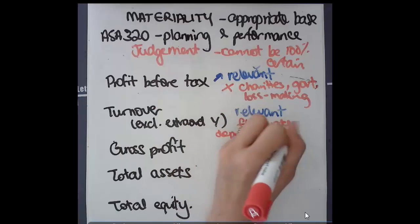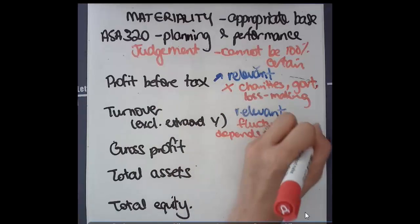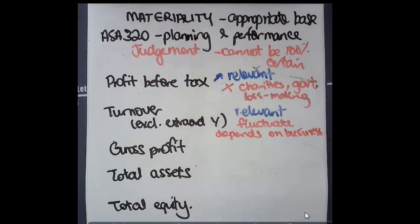This is why it's really important as part of ASA 315 to understand the business that your client is in. You need to be able to understand whether there are significant trends, whether there's a lot of cycles. If it's a company that produces a fad item one year, no item or lower sales the next year, then turnover might fluctuate too much to be a really good appropriate base.